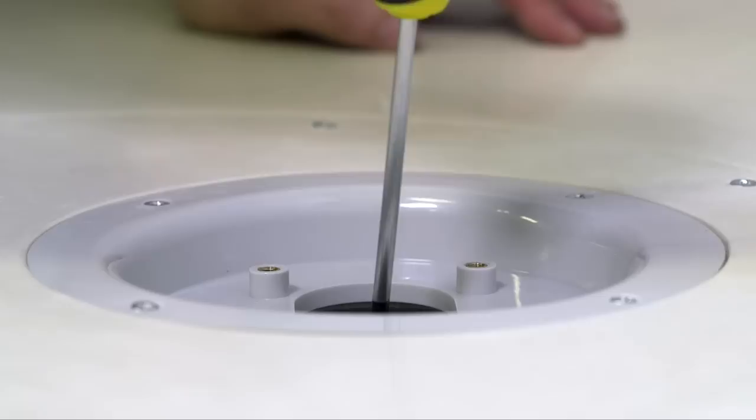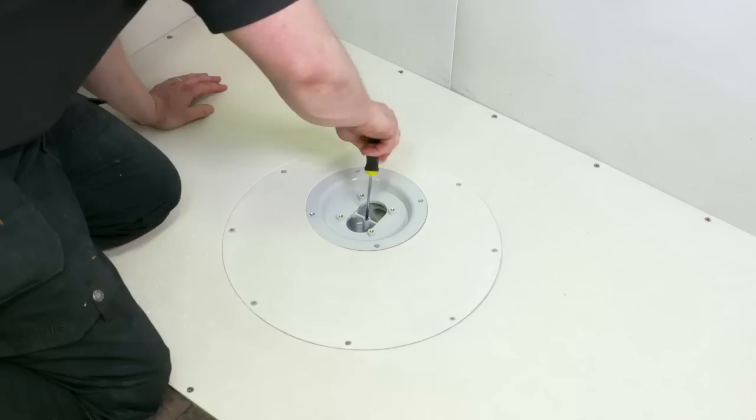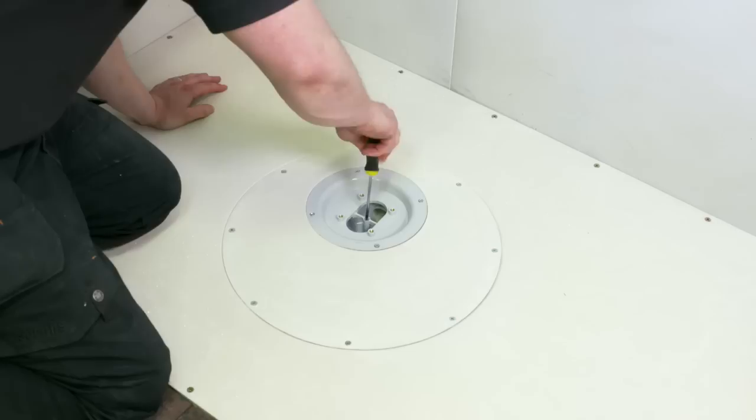Align the bowl and sump, then fit the 25mm screw through the central bowl crossbar. Tighten the screw by hand until the crossbar meets with the boss in the centre of the sump. It is essential that this is tightened by hand only and not with a power tool.